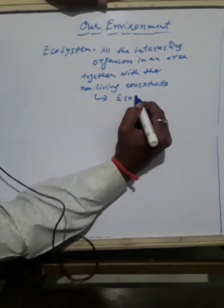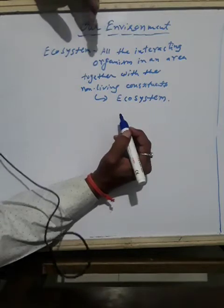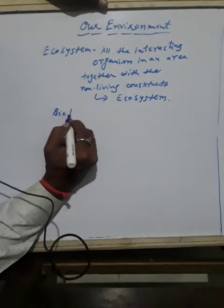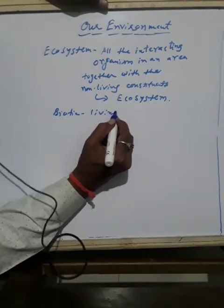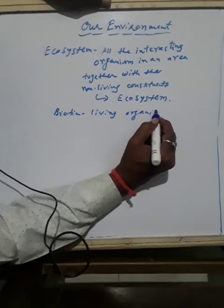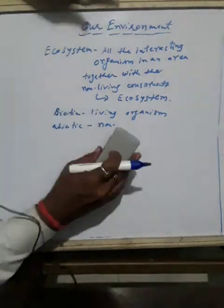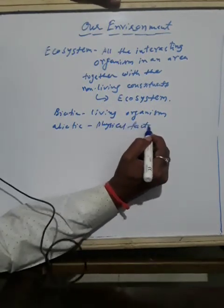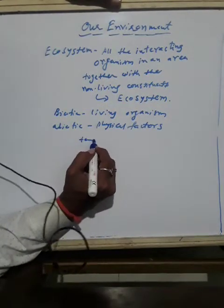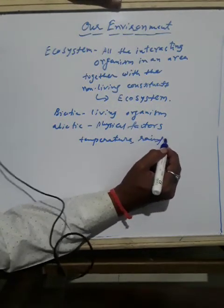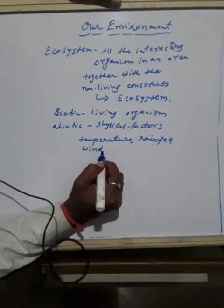An ecosystem consists of biotic components comprising living organisms — so living organisms are called biotic components — and abiotic components. Abiotic components are non-living, or physical features, also called physical factors, like temperature, rainfall, wind, soil, and minerals.